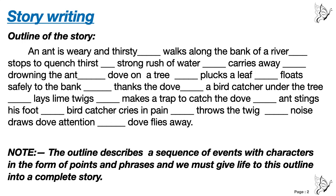Note: the outline describes a sequence of events with characters in the form of points and phrases, and we must give life to these outline into a complete story. The phrases or points given in the outline are incomplete — for example, 'an ant is weary and thirsty' is point one, 'walks along the bank of a river' is point two. You have to add some more words or sentences to make each point meaningful. This outline is lifeless — you are going to give life to it to form a complete story.